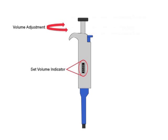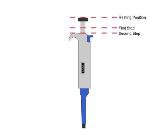To use the pipette, the operating button is depressed where two points of resistance, known as stops, will be felt. The first stop is used to aspirate the set volume, whereas the second stop is used to completely flush out the aspirated liquid.